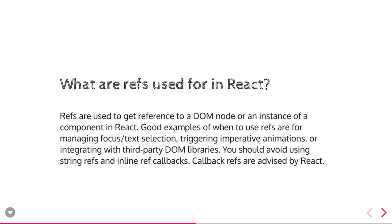References in React are used to get the reference of a DOM node: this.refs.referenceName.getDOMNode().value. You trigger that DOM node to get it, and then you can get the value or whatever attribute you want to access from that DOM node. References are used for managing focus, text selections, triggering animations, or getting values from DOM nodes.